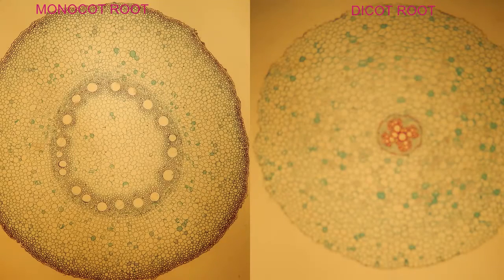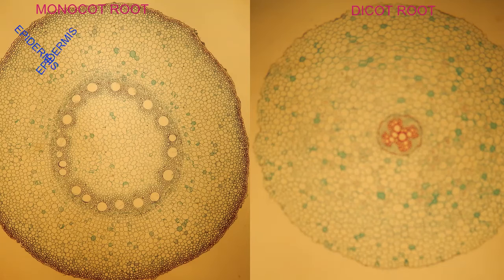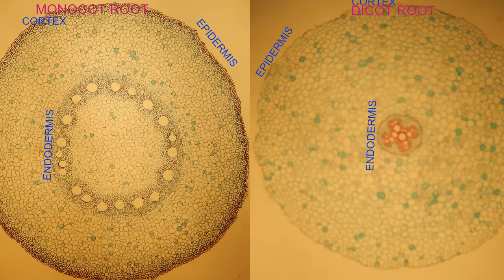The roots of monocots and young dicots are similar in that there is an outer epidermis, a cortex, an inner endodermis, an area known as the pericycle interior to the endodermis, bundles of xylem vessels, and bundles of phloem sieve tubes near the xylem.